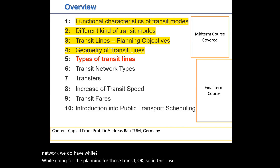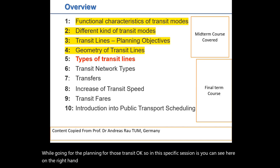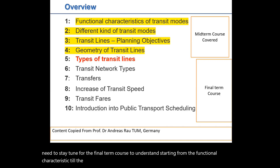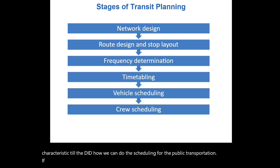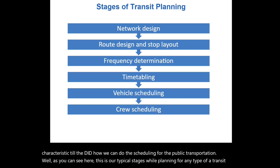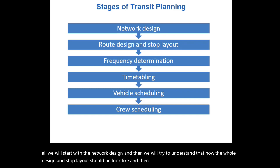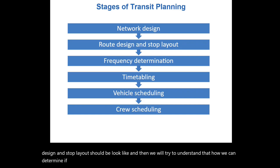In this specific session, as you can see on the right-hand side, all the yellow courses we already covered in the mid-term course. You need to stay tuned for the final term course to understand everything starting from the functional characteristics through to how we can do the scheduling for public transportation. These are the typical stages while planning for any type of transit: network design, route design and stop layout, frequency determination, timetabling, vehicle scheduling, and then crew scheduling.